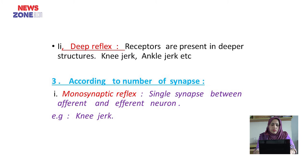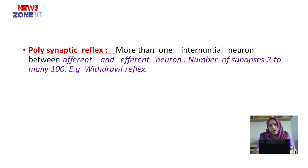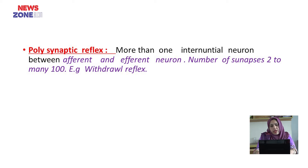According to the number of synapses, reflexes are monosynaptic reflex and polysynaptic reflex. In monosynaptic reflex, there is a single synapse between the afferent and efferent neuron — that is, the knee jerk. In polysynaptic reflex, there are more than one interneuron between afferent and efferent neuron, with the number of synapses ranging from 2 to 100. An example is the withdrawal reflex.